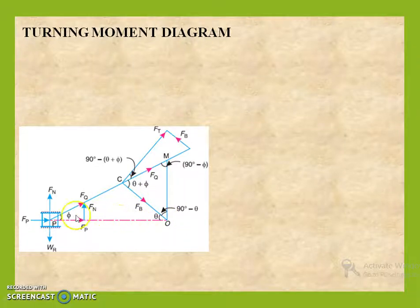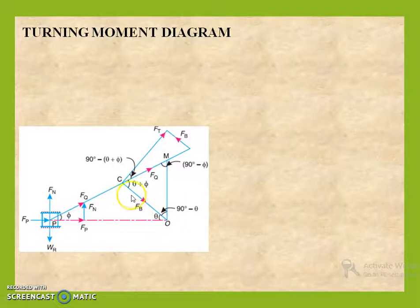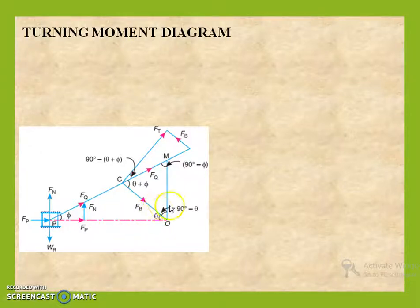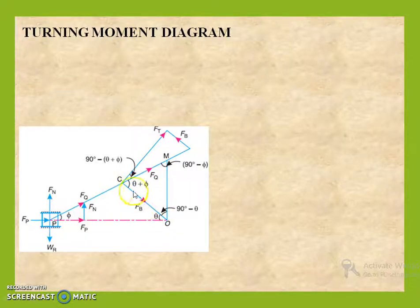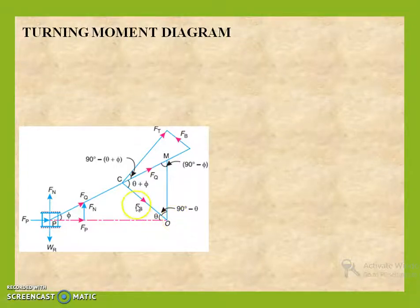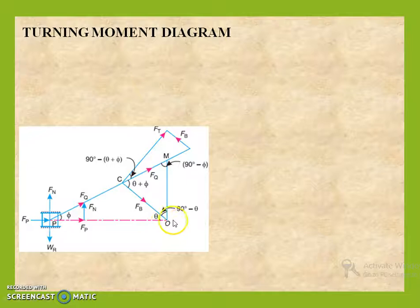So when this crank is in line with this liner stroke, this angle theta will be equal to 0. Theta means it is the angle made by the crank with respect to this line, or the crank angle. So we will see what component is actually causing the rotation of the crank. If this force Fq is acting here, we can resolve it into two components: one is the normal component to the crank marked as Ft, and the other is the parallel component marked as Fb. The component which is parallel will be causing a thrust at the crankshaft, so it does not help the rotational movement of the crankshaft.